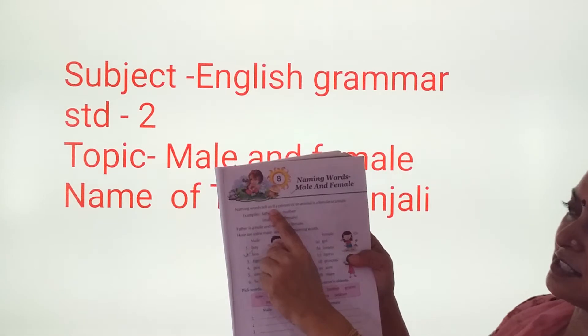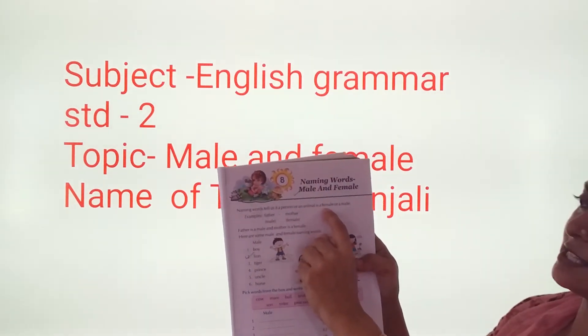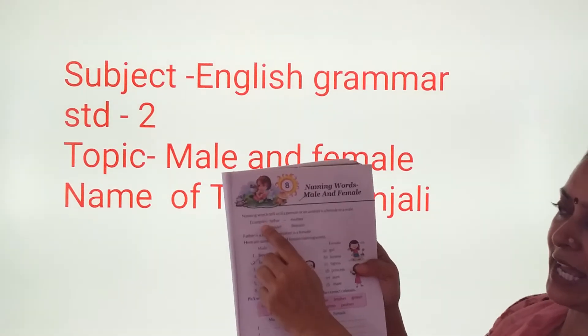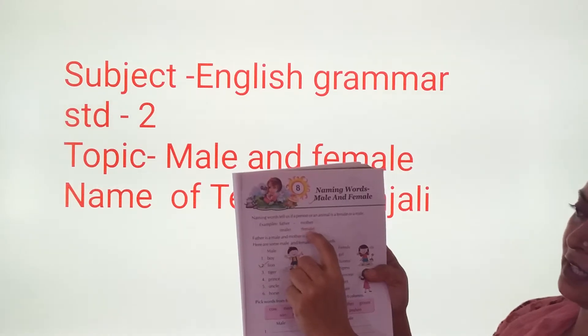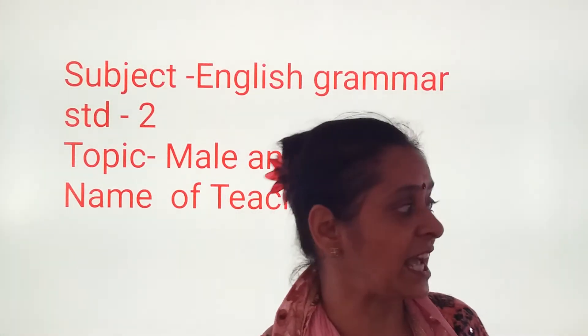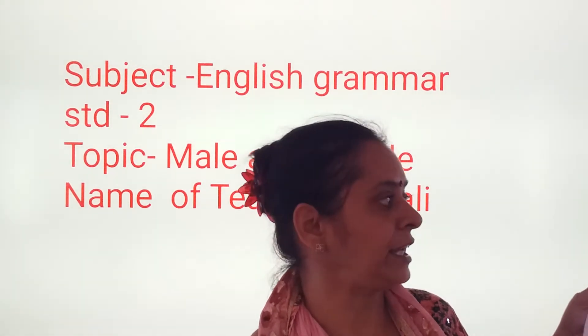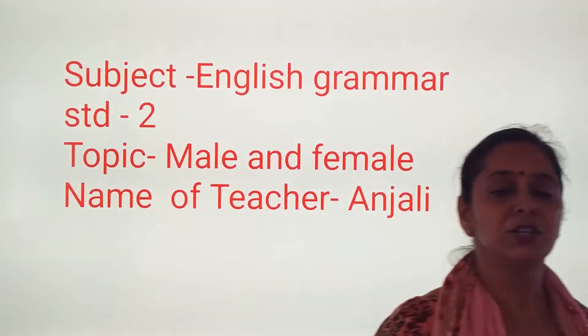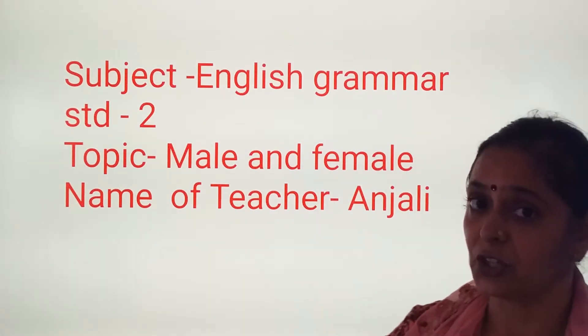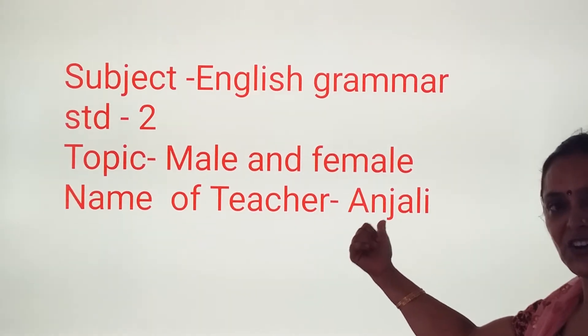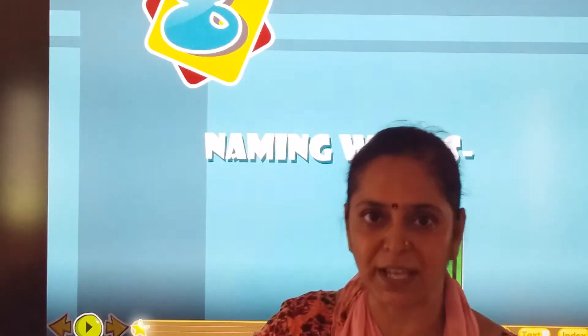Naming words tell us if a person or animal is a female or a male. For example, father is a male and mother is a female. So naming words tell us if a person or an animal is a male or a female. Get ready with your notebook — today our topic is male and female. To get a clearer explanation, we will watch a small video on naming words: male and female.